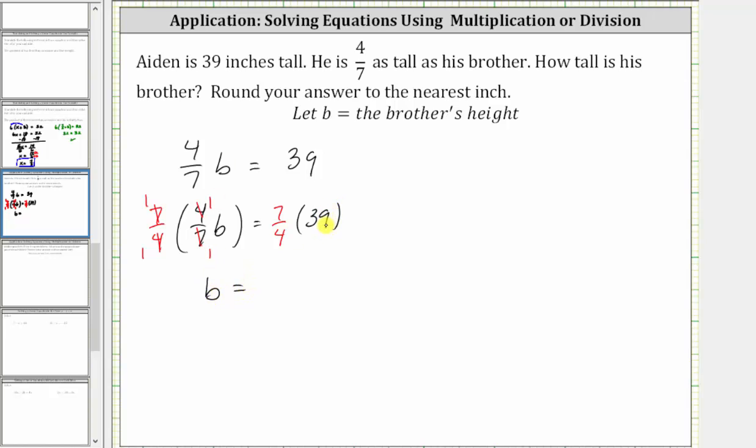On the right side, let's write 39 as a fraction with a denominator of one. There are no common factors other than one between the numerators and denominators, and therefore we multiply the numerators and denominators. Seven times 39 is equal to 273, and four times one is equal to four.